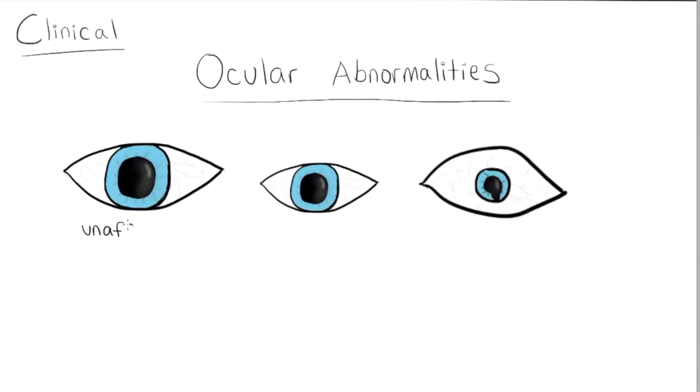Ocular abnormalities in Strömme syndrome include small eyes called microphthalmia, and malformations of the anterior segment or front part of the eye, including a small or cloudy cornea, or poor attachment of the iris to the cornea. These eye problems can cause poor vision.